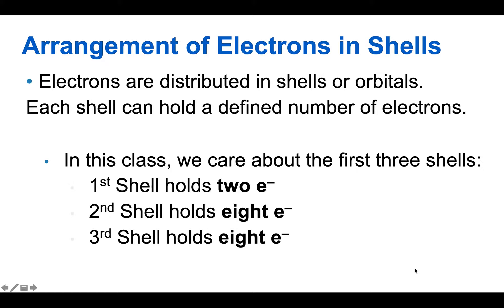Electrons are distributed in what's called shells, or orbitals, and each shell can hold a defined number of electrons.